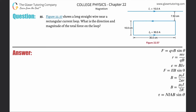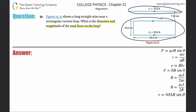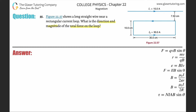Number 55. Figure 22.57 shows a long straight wire near a rectangular current loop. What is the direction and magnitude of the total force on the loop? Anytime they ask what is the force on the loop, you should interpret this as: what is the direction and magnitude of the total force on the loop produced by the magnetic field of the other current?